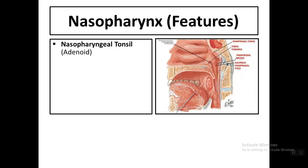The nasopharynx is the cavity bounded superiorly by the base of the skull and inferiorly by the soft palate. In the nasopharynx we find the nasopharyngeal tonsil, also called the pharyngeal tonsil or adenoid, located at the base of the skull. We also find the opening of the auditory tube.